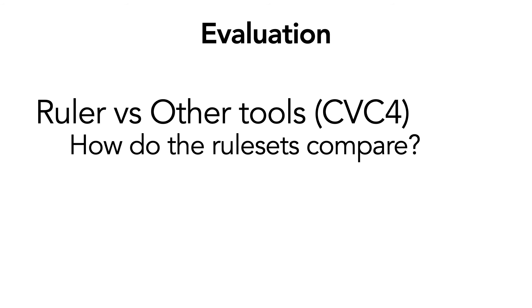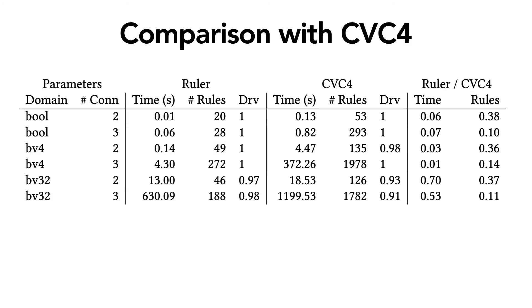We are first interested in comparing Ruler's performance and rule set against CVC4s. Let's focus on the largest experiment, which is on 32-bit bit vectors with three connectives. Our results indicated that Ruler is significantly faster than CVC4 and we also found that Ruler generates significantly fewer rules than CVC4. But this raises the question of whether Ruler's rule sets are actually even useful.